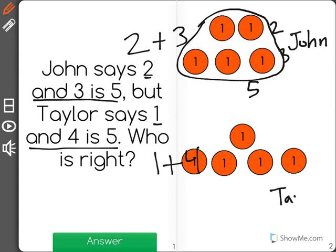And down here I have Taylor's group, which is 1 plus 4. I'm going to erase this so it's not on top of my counter anymore.